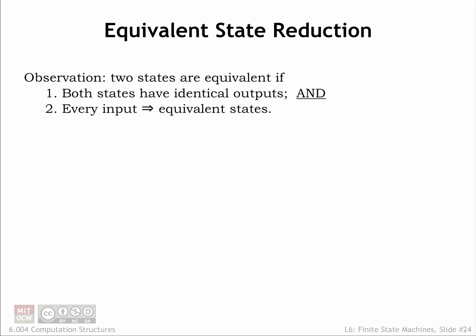Earlier we talked about finding equivalent FSMs with fewer states. Now we'll develop an approach for finding such FSMs by looking for two states that can be merged into a single state without changing the behavior of the FSM in any externally distinguishable manner.